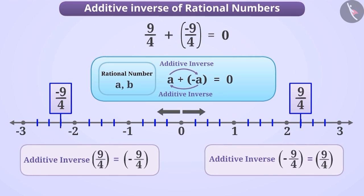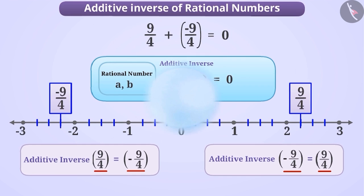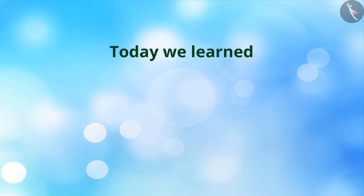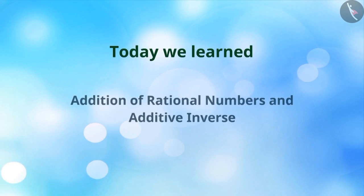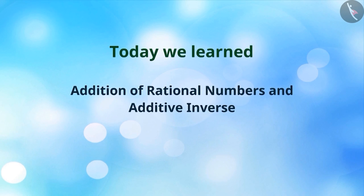The additive inverse of a rational number is obtained by changing its sign. Now you must have understood the additive inverse. Today we learned the addition and additive inverse of rational numbers. In the next video, we will get to know them better through some examples.